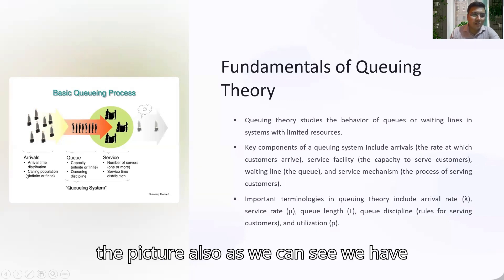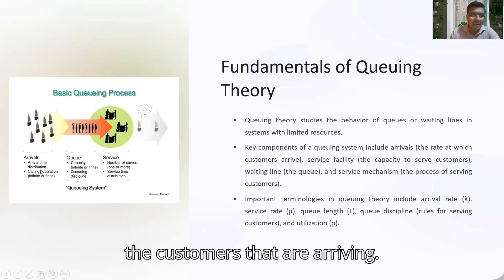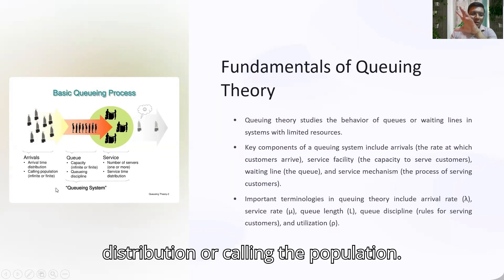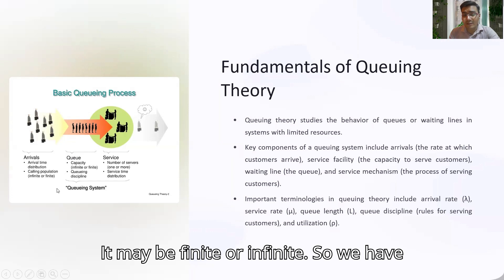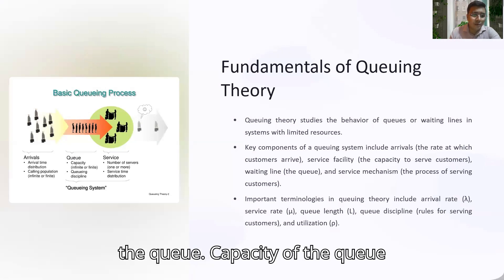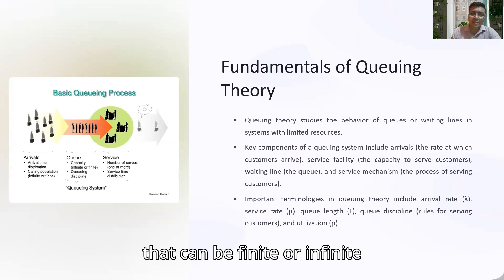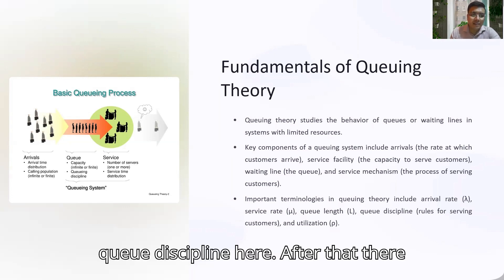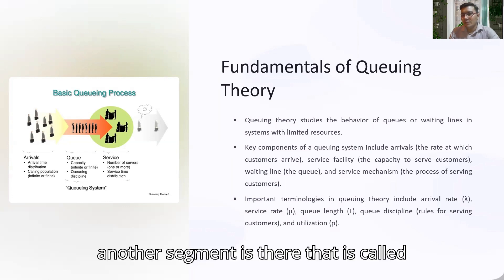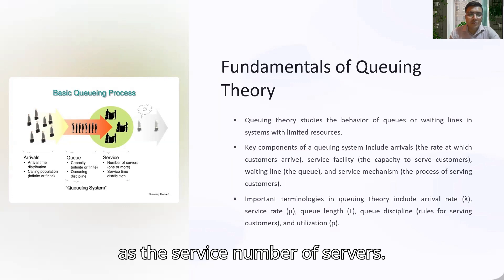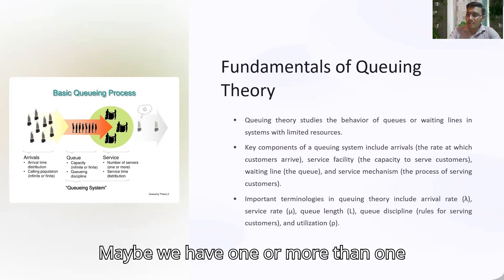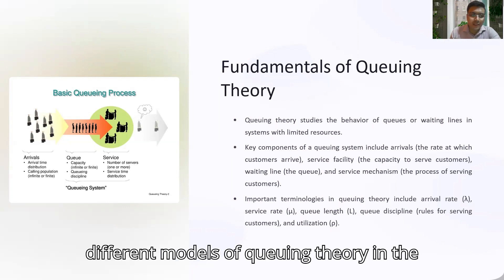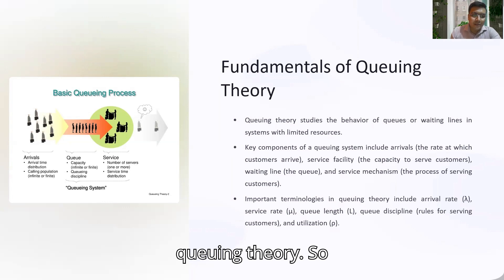As we can see in the diagram, we have customers arriving — this is called the arrival time distribution or calling population, which may be finite or infinite. We have the queue capacity, which can also be finite or infinite. Based on that we have the queue discipline, and then the next segment is the number of servers — we may have one or more than one server — and based on that we have different models in queuing theory.